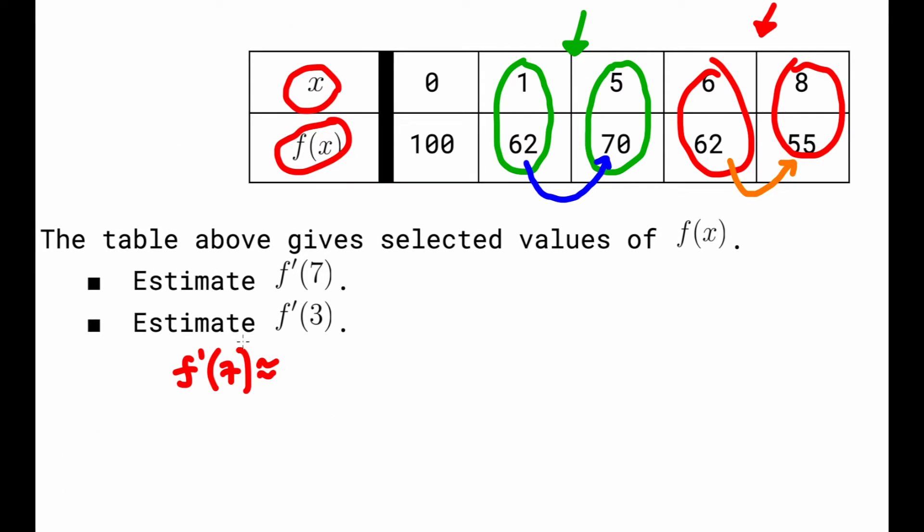So we're trying to figure out the estimation of f'(7). I did a little curly equal sign here which means approximately. We're basically finding the slope between x equals 6 and x equals 8.